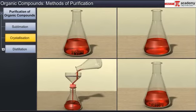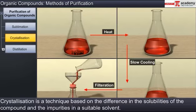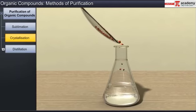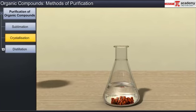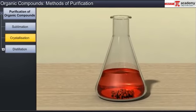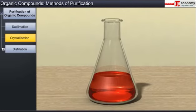Now let's look at the next method of purification called crystallization. It is one of the most commonly used techniques for the purification of solid organic compounds. This technique is based on the difference in the solubilities of the compound and the impurities in a suitable solvent. In this process, the impure compound is dissolved in a solvent in which the compound to be purified is moderately soluble at room temperature and highly soluble at higher temperature. The solution is heated to get a nearly saturated solution, which is then cooled to obtain the compound in its pure crystal form.